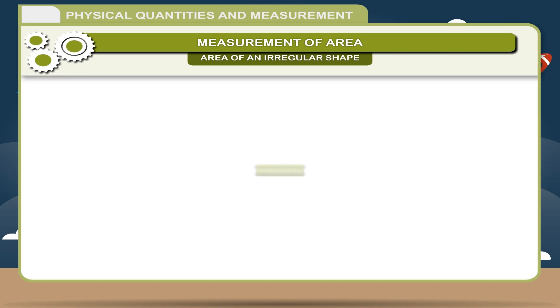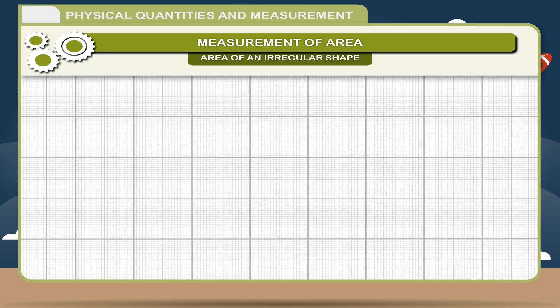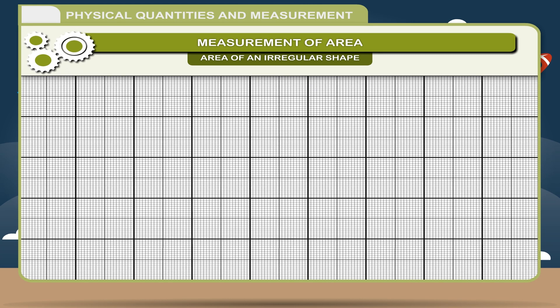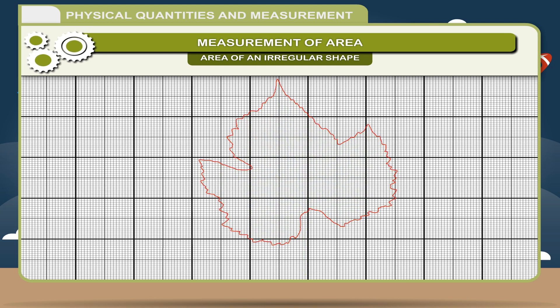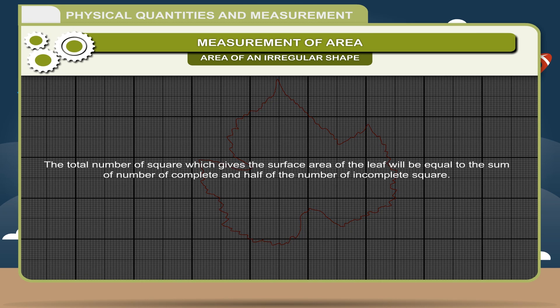Activity: To find the surface of a leaf. Take a graph paper having area of a small square 1 square millimeters. Place a leaf on the graph paper and draw its outline. Remove the leaf and count the number of complete and incomplete squares. Neglect those squares which are less than half. The total number of square which gives the surface area of the leaf will be equal to the sum of number of complete and half of the number of incomplete square.